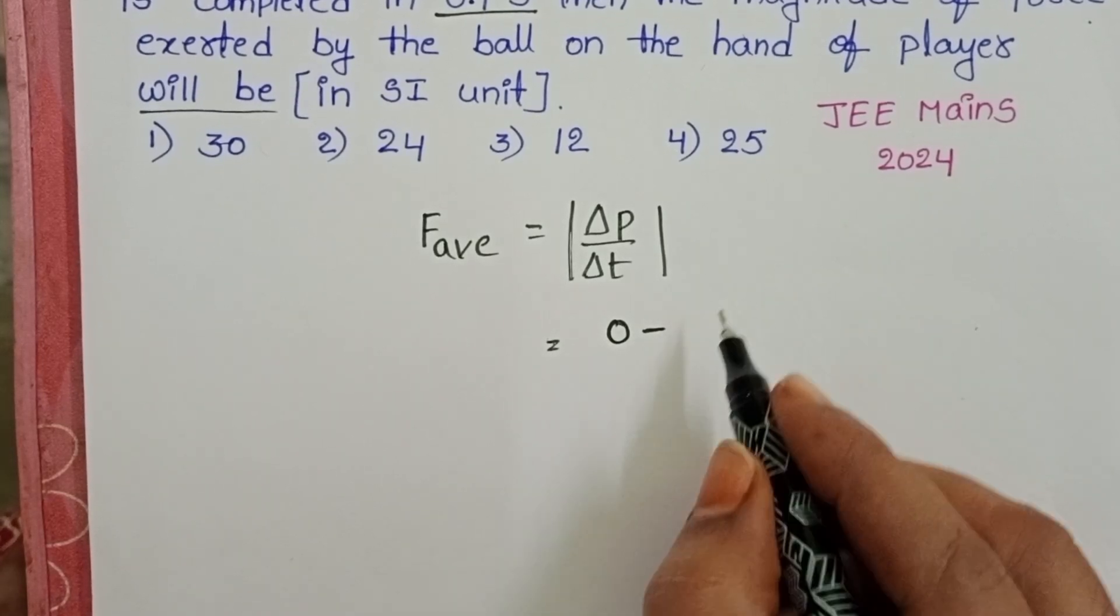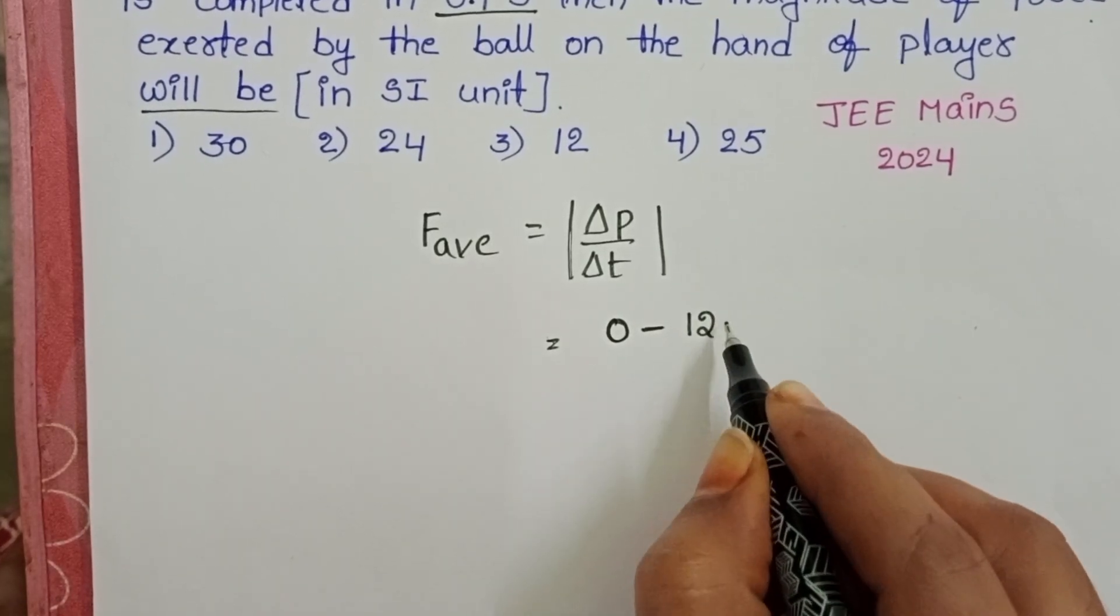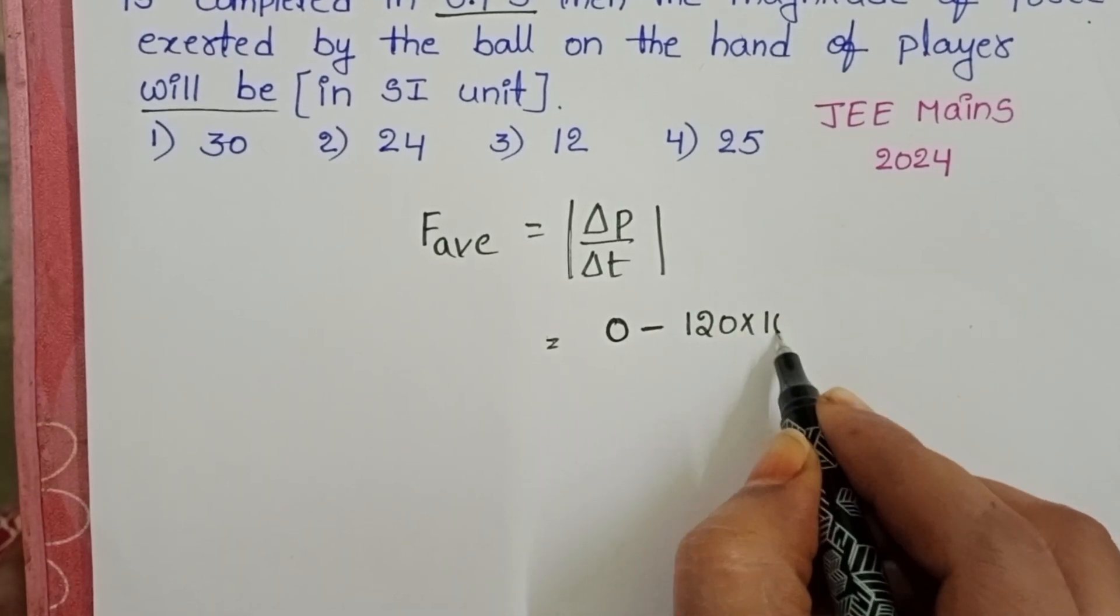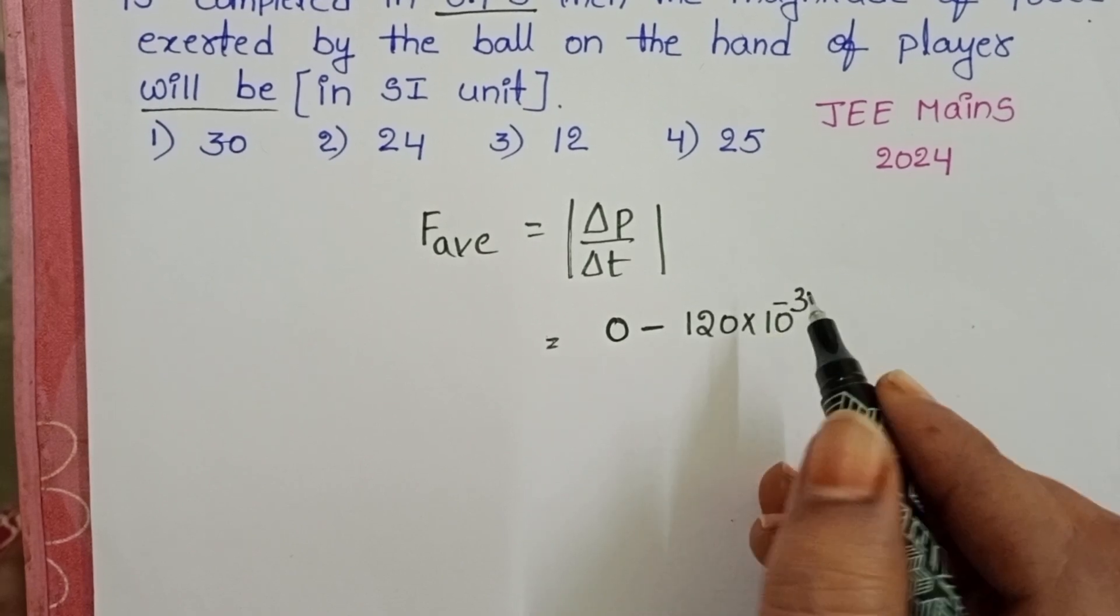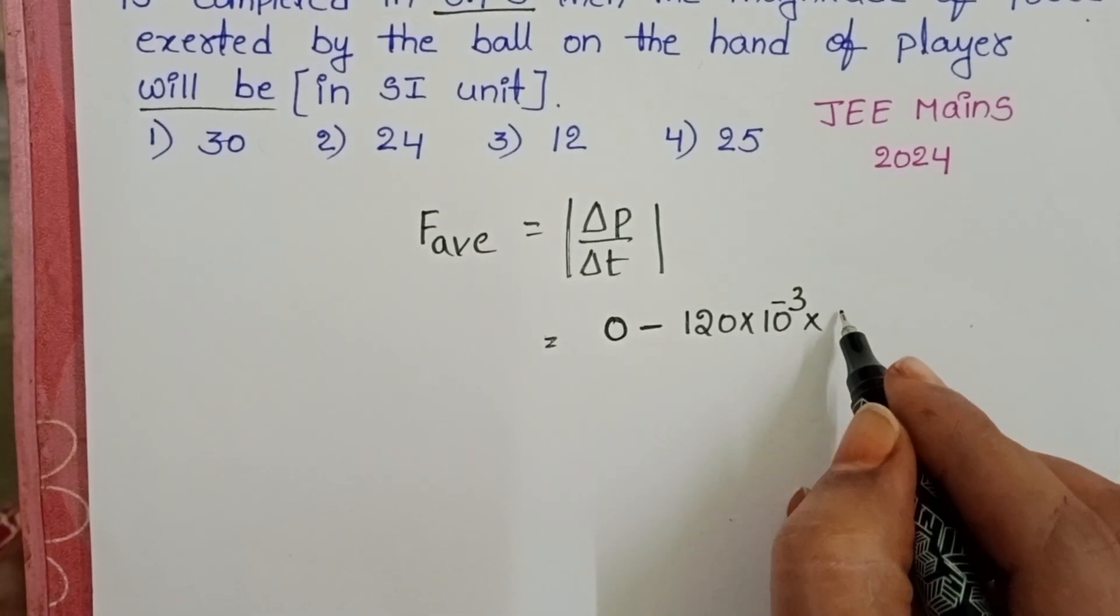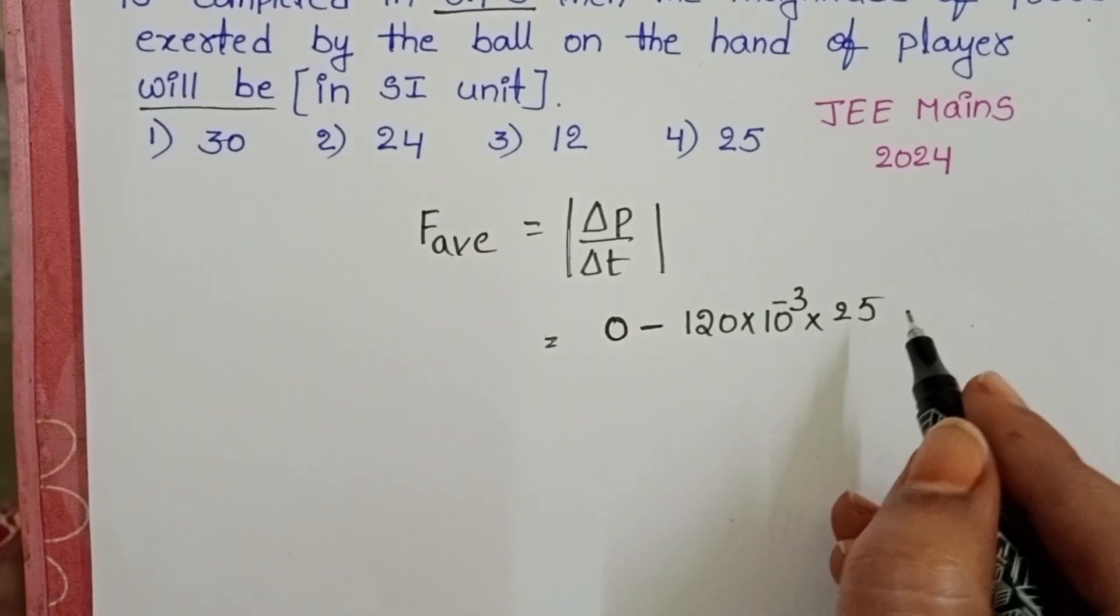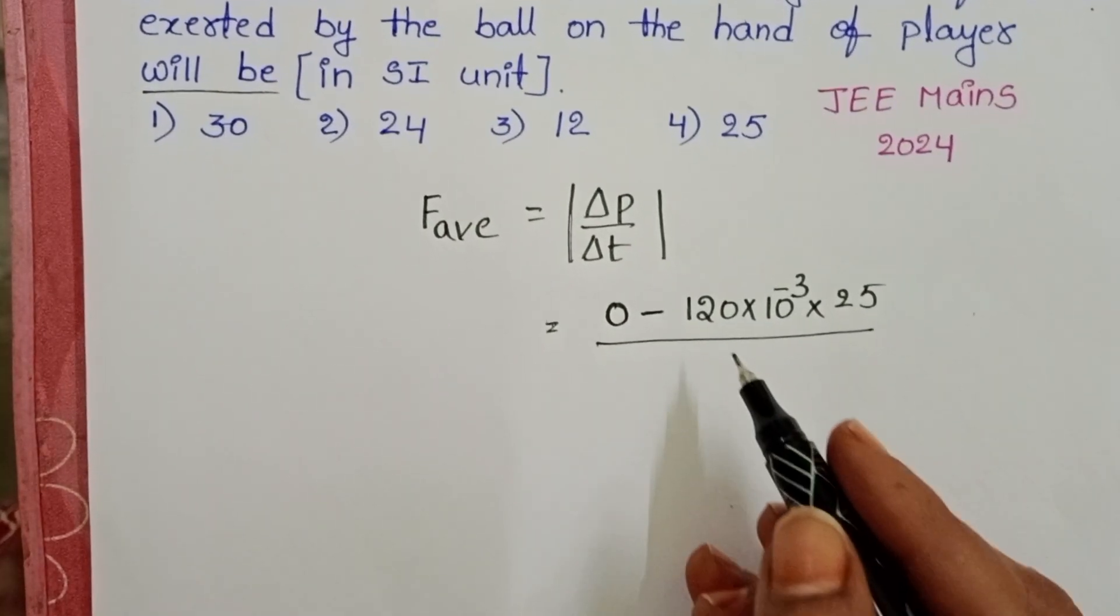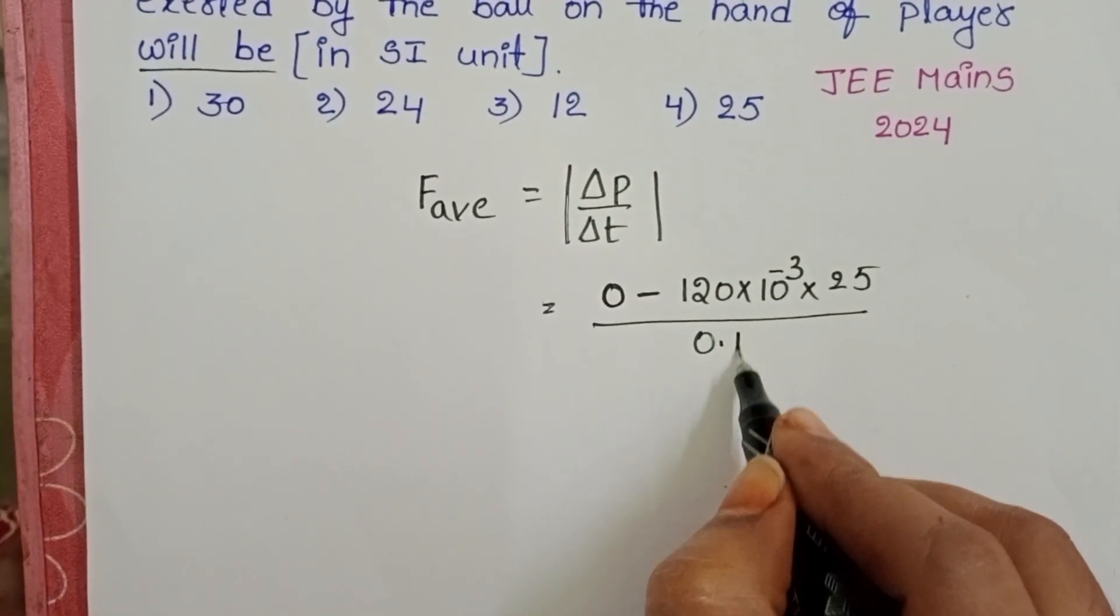Initial momentum of the ball. Mass of the ball is 120 grams. So, 120 into 10 power minus 3 kg. It is moving with initial speed 25 meter per second. And the process takes the time 0.1 seconds.